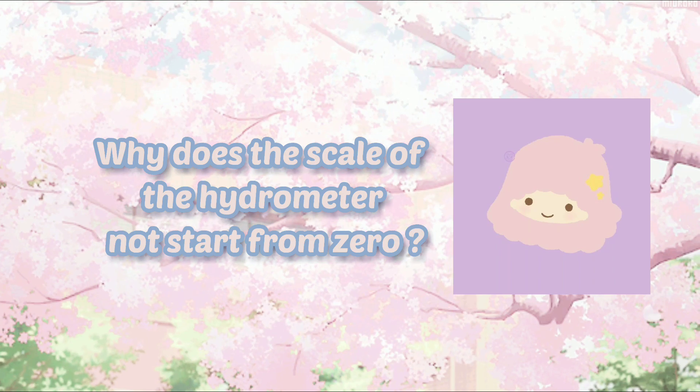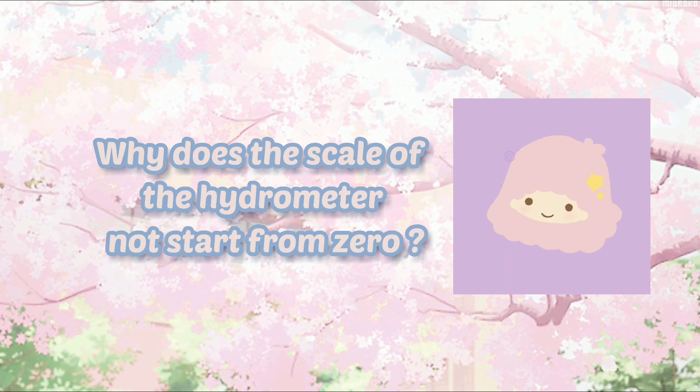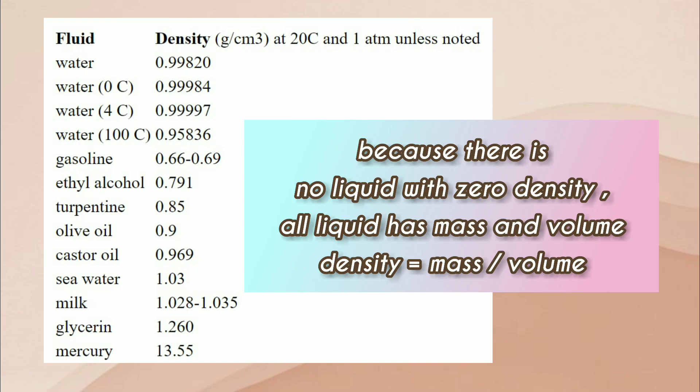Why does the scale of the hydrometer not start from zero? Because there is no liquid with zero density. All liquid has mass and volume. The density is equal to mass per volume.